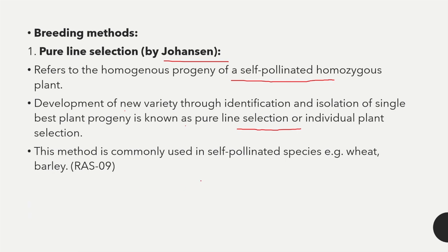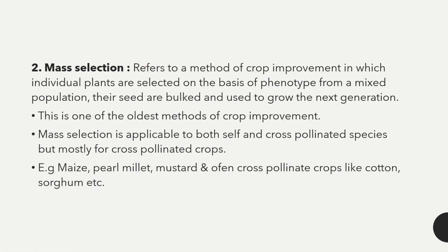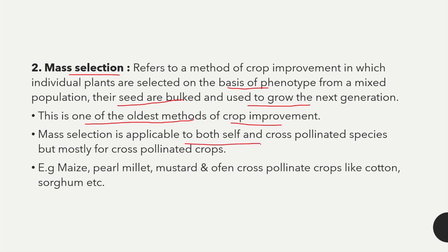The second method is mass selection — a method of crop improvement in which individual plants are selected on the basis of phenotype from a mixed population. Their seeds are bulked and used to grow the next generation. This is one of the oldest methods of crop improvement. Mass selection is applicable to both self and cross-pollinated species, but mostly for cross-pollinated crops like maize, pearl millet, and mustard.